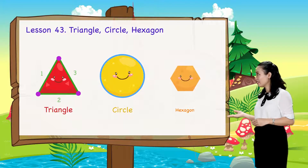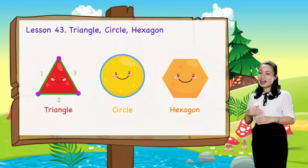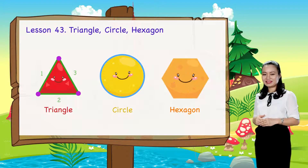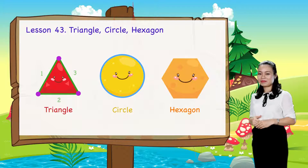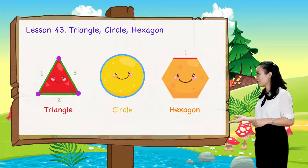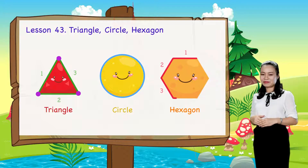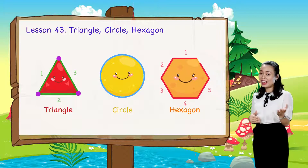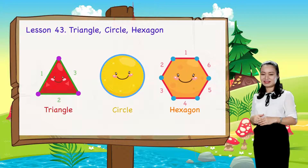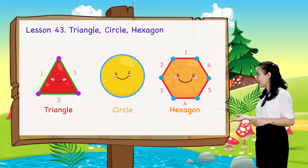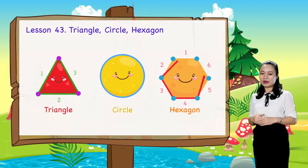This is a hexagon. It has 6 straight sides and 6 corners. All sides are equal.